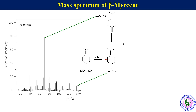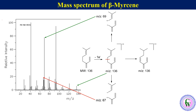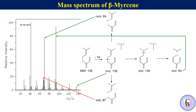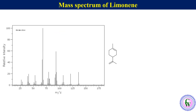Breaking the same allylic bond may also result in formation of an allylic radical and a carbocation with m/z value of 67. The molecular ion may isomerize to a more stable conjugated system with the same m/z value of 136. Breaking this allylic C-C bond produces a propyl radical and a resonance-stabilized carbocation with m/z value of 93. The base peak at m/z 41 is for the allylic cation.